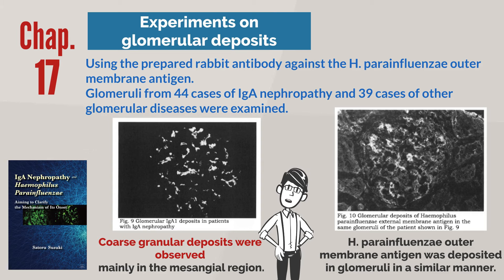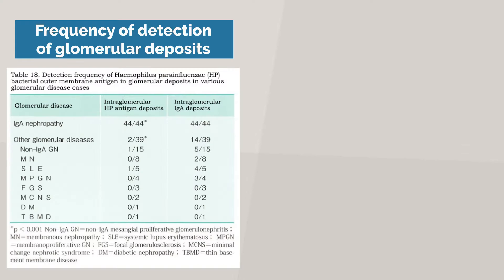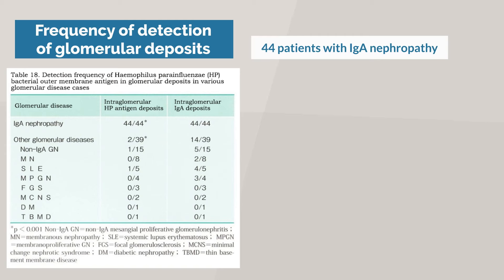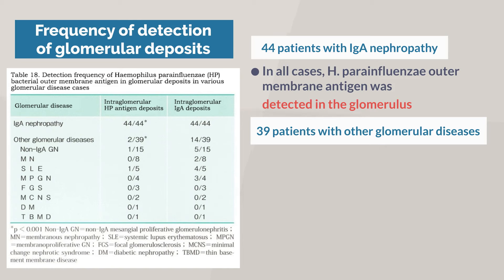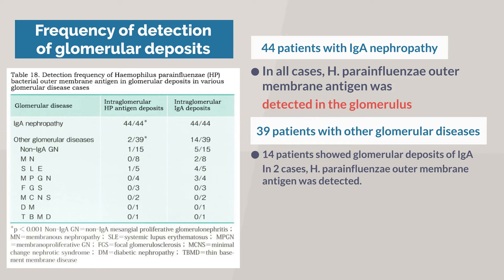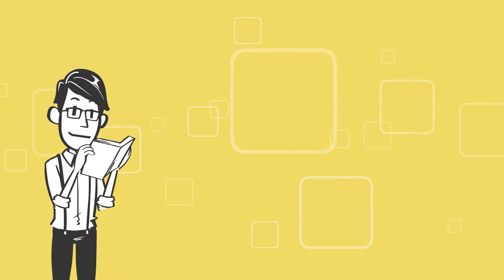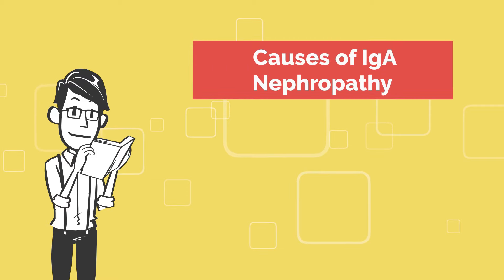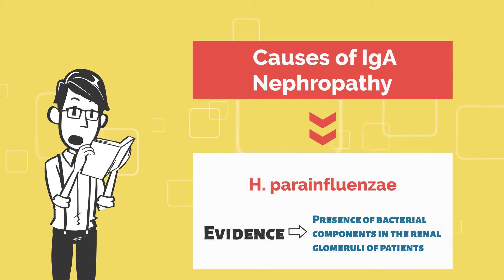This is a great discovery. Dr. Suzuki summarized the results as follows. In all 44 patients with IgA nephropathy, H. para-influenzae outer membrane antigen was detected in the glomeruli. On the other hand, 14 of 39 patients with other glomerular diseases showed glomerular deposits of IgA, and H. para-influenzae outer membrane antigen was detected in only two of them. Glomerular deposits of H. para-influenzae outer membrane antigen were found to be significantly more frequent in IgA nephropathy. To summarize, Haemophilius para-influenzae is a possible cause of IgA nephropathy, evidenced by the presence of bacterial components in the renal glomeruli of patients.